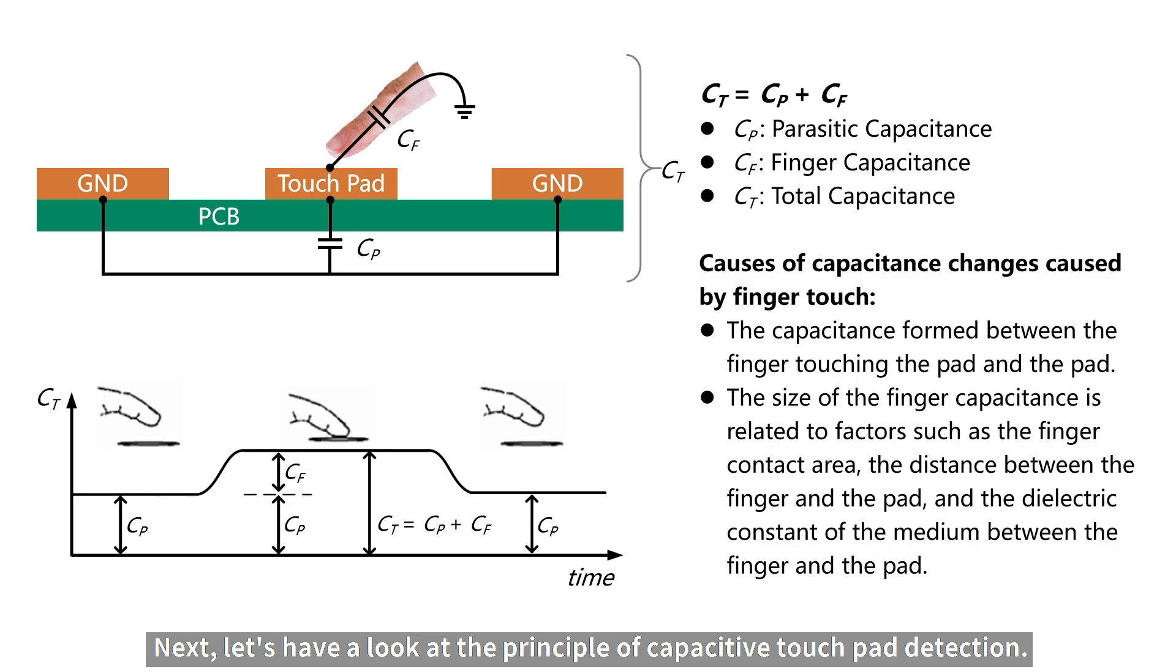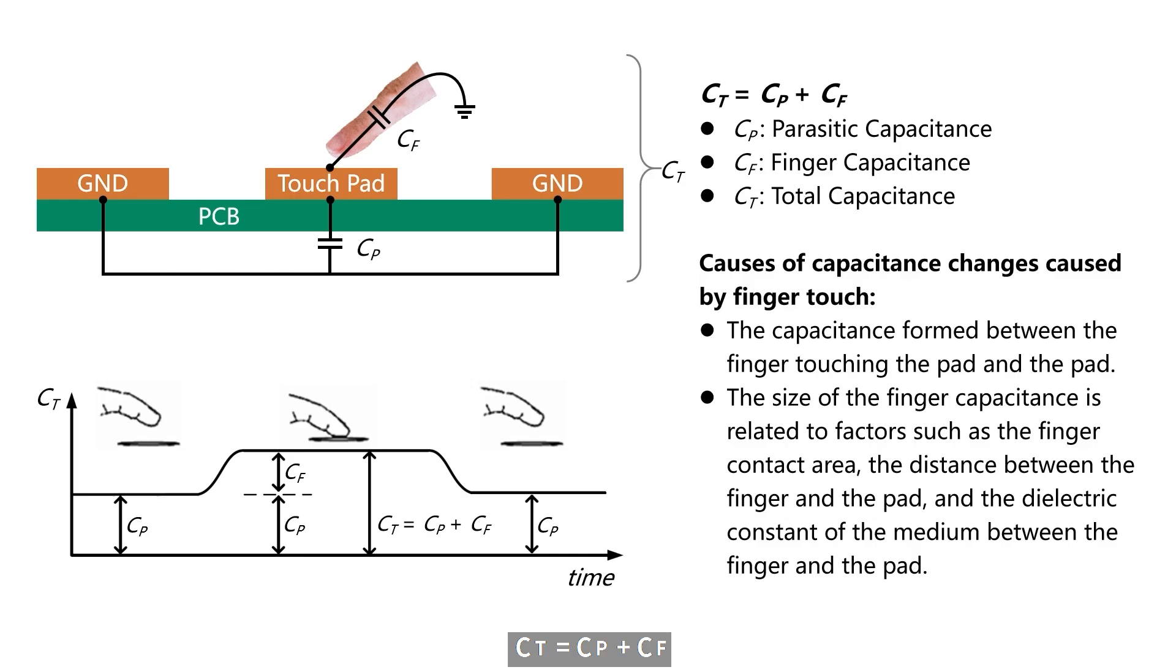Next, let's have a look at the principle of capacitive touch button detection. The touchpad on the PCB and the nearby GND form parasitic capacitance. Due to the existence of human body capacitance, when a finger touches the pad, a capacitance CF is introduced, which increases the total capacitance. The total capacitance CT can be expressed as CT equals CP plus CF.